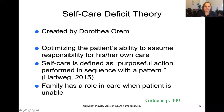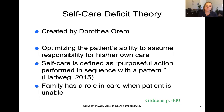One more theory is the self-care deficit theory, created by Dorothea Orem. It talks about optimizing the patient's ability to assume responsibility for their own care. Self-care is defined as purposeful action performed in sequence with a pattern. Examples include teaching patients to check their blood pressure or blood sugar at home, teaching parents of children with chronic illness to suction their children at home, and using a CPAP breathing machine at night. When the patient is unable to care for themselves, we consider the role the family has in providing care.